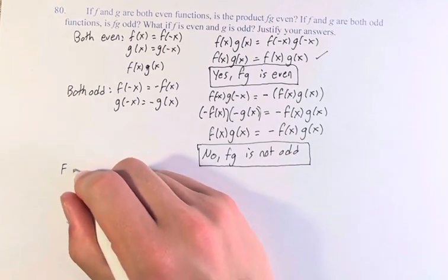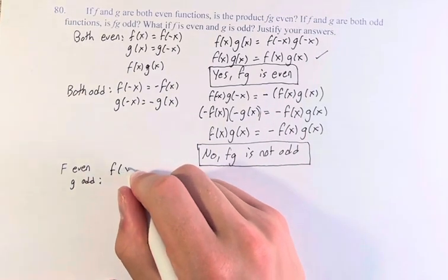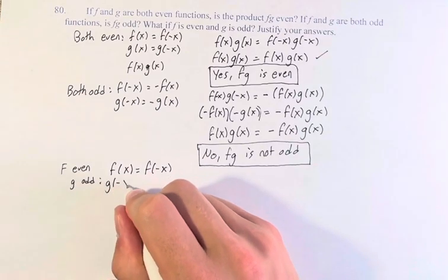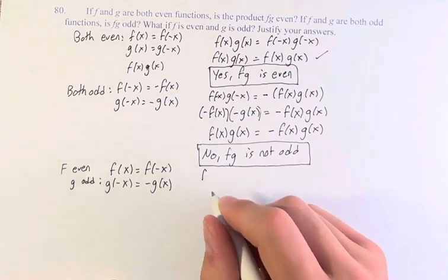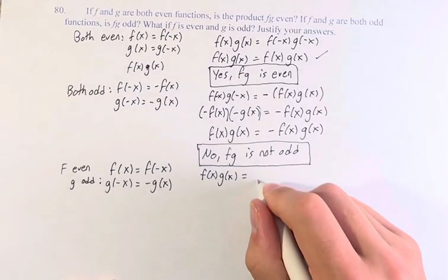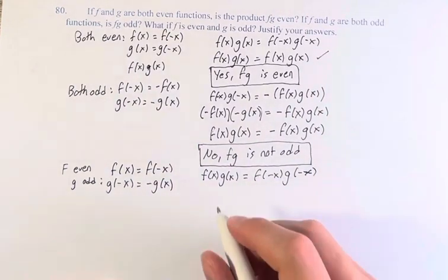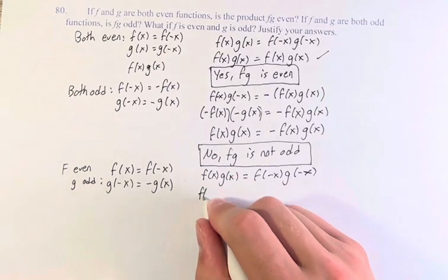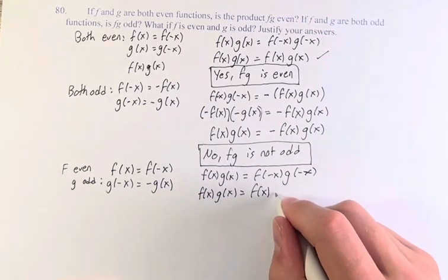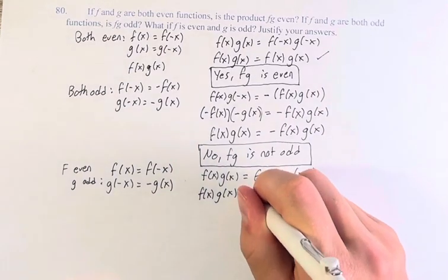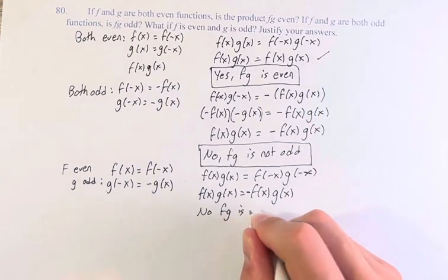What if f is even and g is odd? A combination of the two. f of x equals f of negative x because it's even, and g of negative x equals negative g of x because it's odd. So is fg even? Is f of x times g of x equal to f of negative x times g of negative x? f of negative x is just f of x, and g of negative x is negative g of x — writing the negative out front, we get negative f of x times g of x. fg is not the same as negative fg. So no, fg is not even.